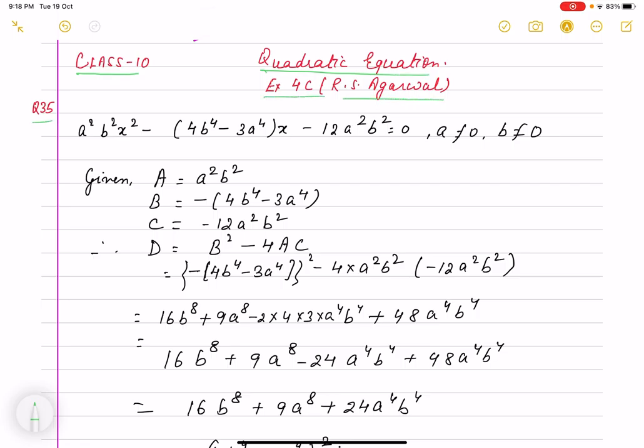The question is: a²b²x² minus (4b⁴ - 3a⁴)x minus 12a²b² equals 0, and we have to evaluate x. As it is degree 2, we know there will be 2 values of x.